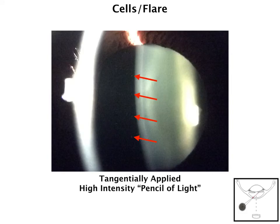Now let's talk about the anterior chamber. It is possible to look at cells or flare in the anterior chamber. It's kind of difficult to image because of the subtlety of these cells. But if you look very closely at this image where the red arrows are, you can see those white dots. The only way you could possibly get these types of pictures is by using what we call a high-intensity pencil of light — everything is turned up to the maximum setting, and you have the narrowest possible beam, shining it at about a 45 to 50 degree angle with the slit lamp facing directly onto the eye. These are very difficult to take, but with some practice and with enough cells in the anterior chamber, it is possible to get them.